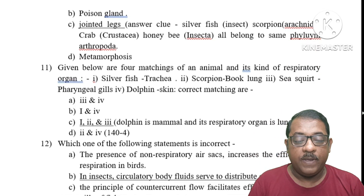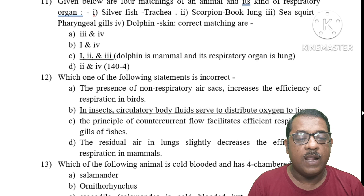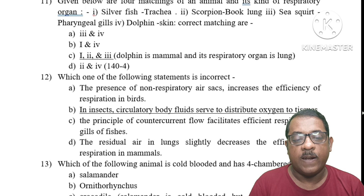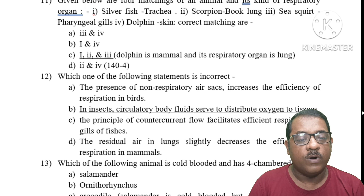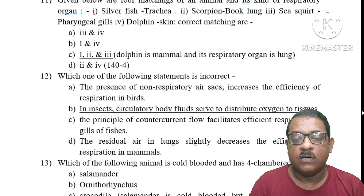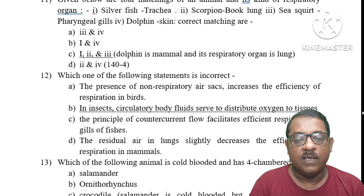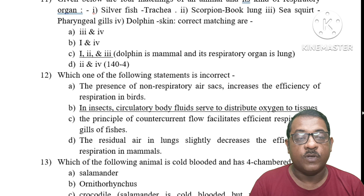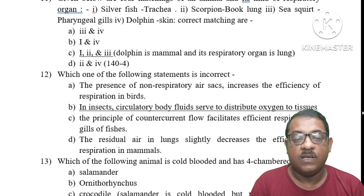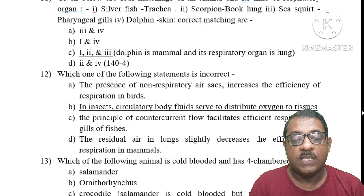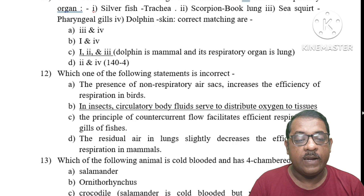Question 11: Match the following animals with their respiratory organs. Silverfish — trachea; Scorpion — book lung; Sea scorpion — pharyngeal gills; Dolphin — skin. Options 1, 2, and 3 are correct, but option 4 is incorrect because dolphin is a mammal and its respiratory organ is the lung, not skin.